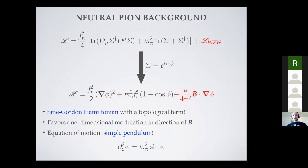In strong magnetic fields, the charged pions become heavy by Landau level quantization and go away at sufficiently strong fields and low energies. QCD boils down to the physics of neutral pions, and our effective theory simplifies tremendously. If you keep only the neutral pion, represented by a dimensionless field φ rescaled by the pion decay constant, the invariant part of the effective theory reduces to something familiar as the sine-Gordon model.